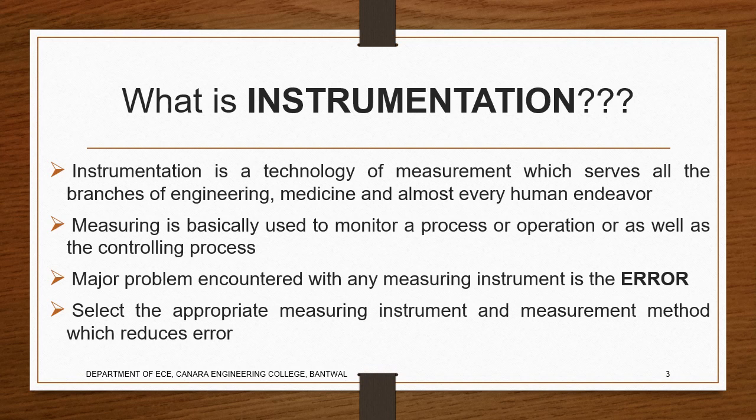For example, with a stethoscope we need to have exact heartbeats. We need to know, before taking the measurement, what the instrument is all about and what the characteristics are, so that it will be easy for us to analyze the readings we get — whether they are correct or we have some kind of errors. Measuring is basically used to monitor a process or operation as well as for the controlling process. Whenever we take an instrument and measure any quantity, error will occur — definitely error will occur.